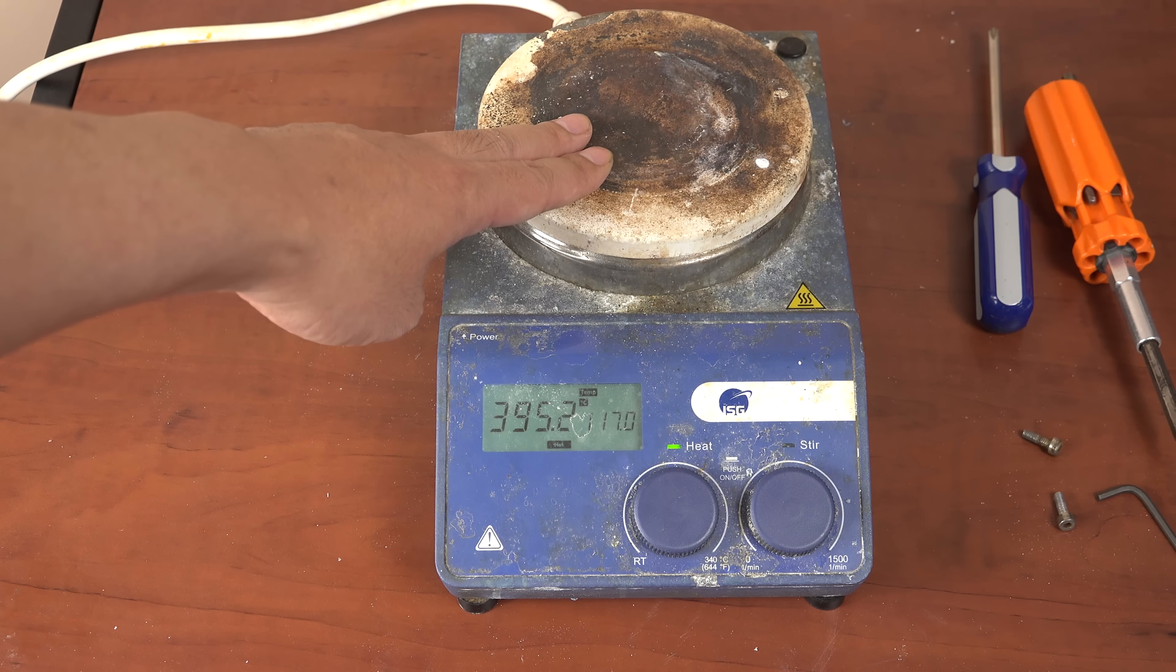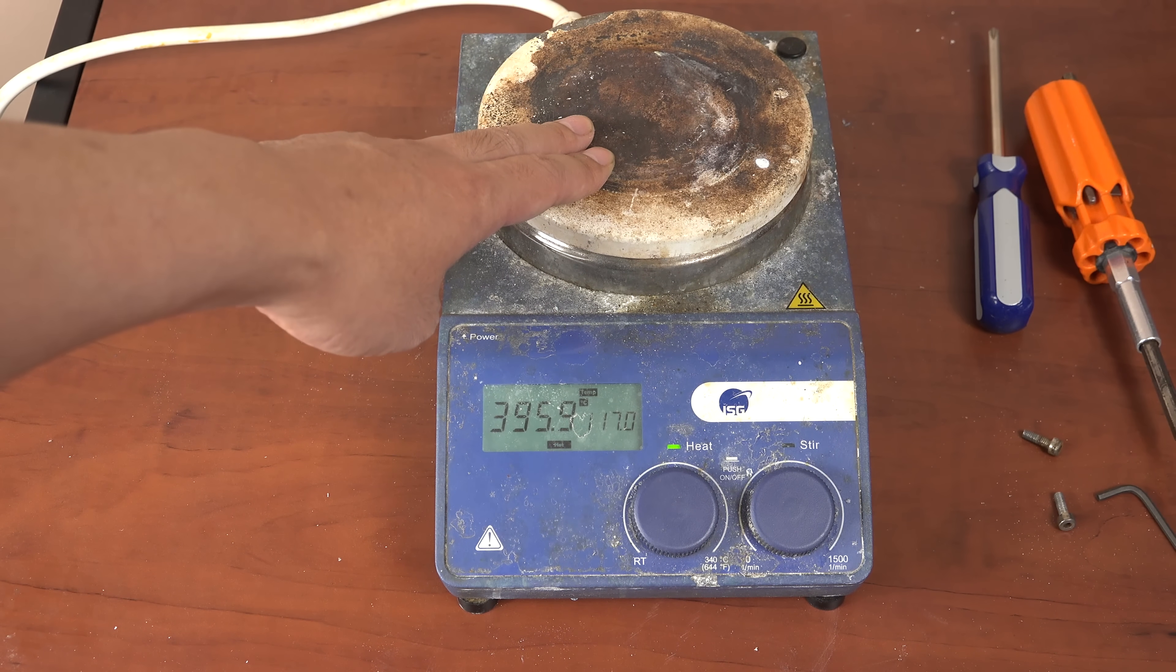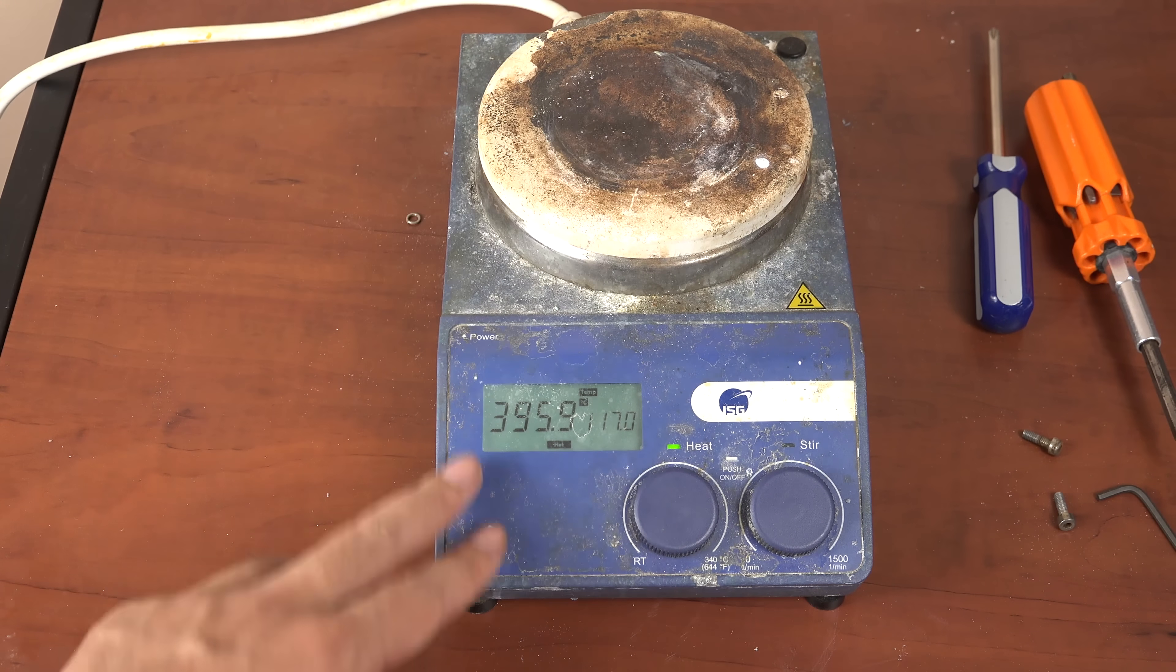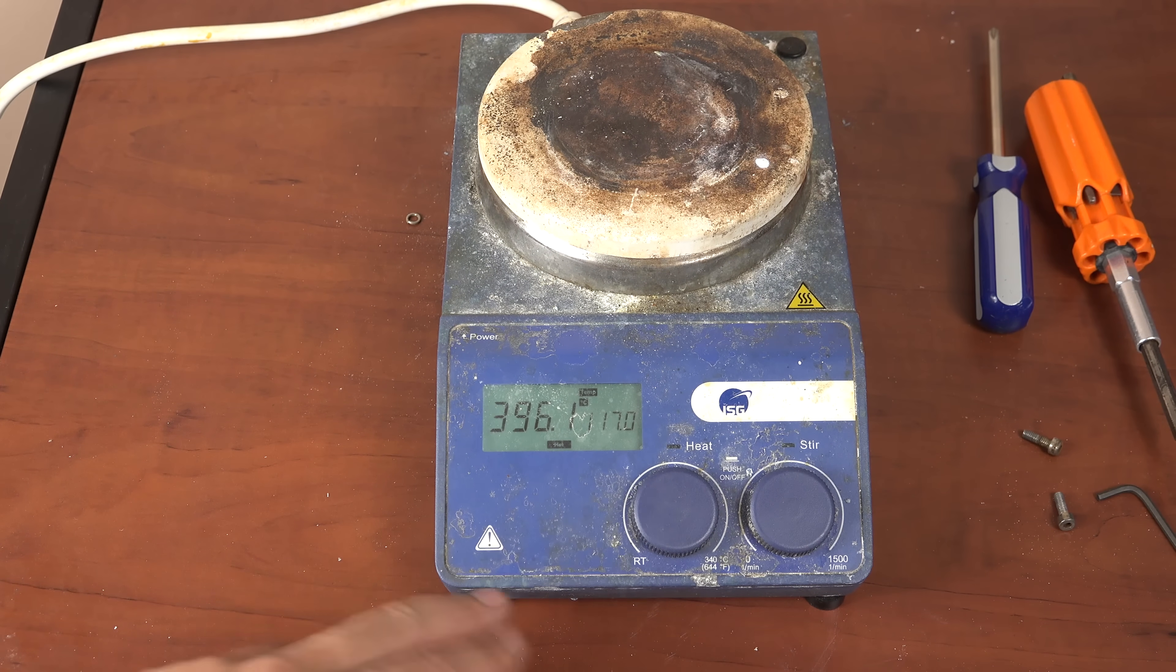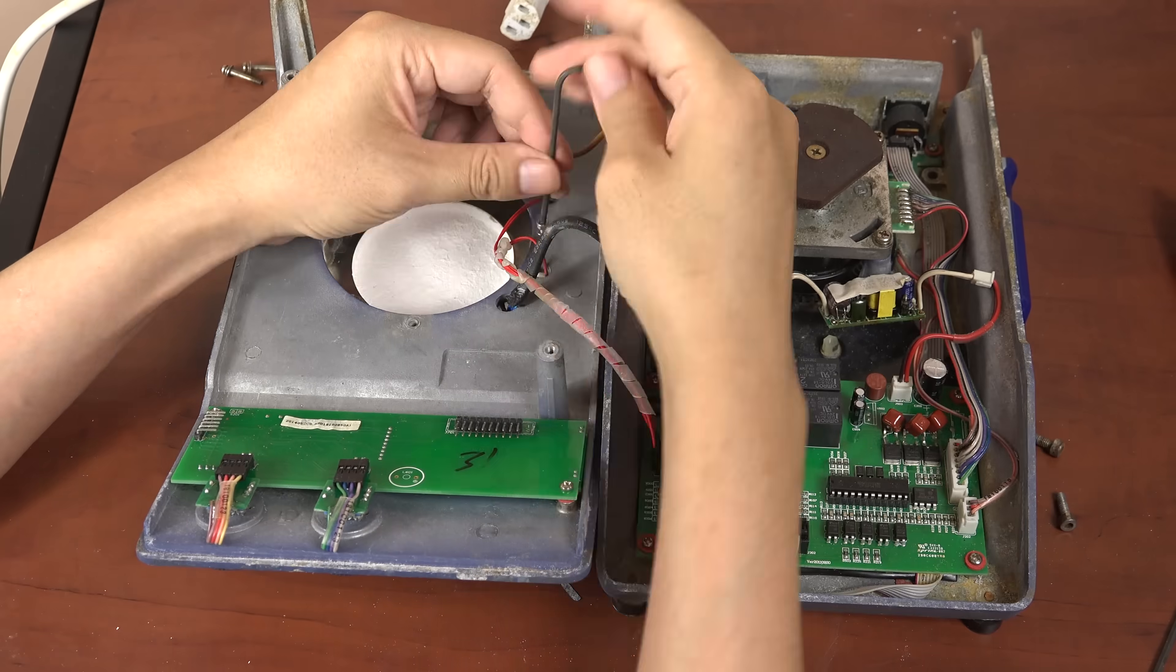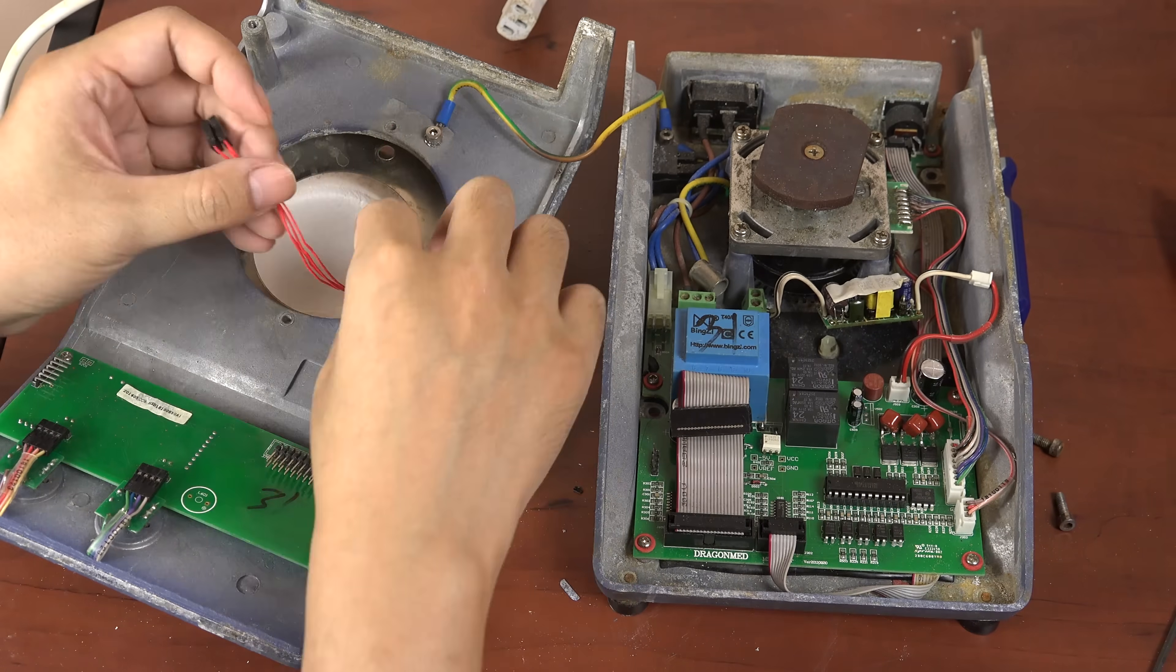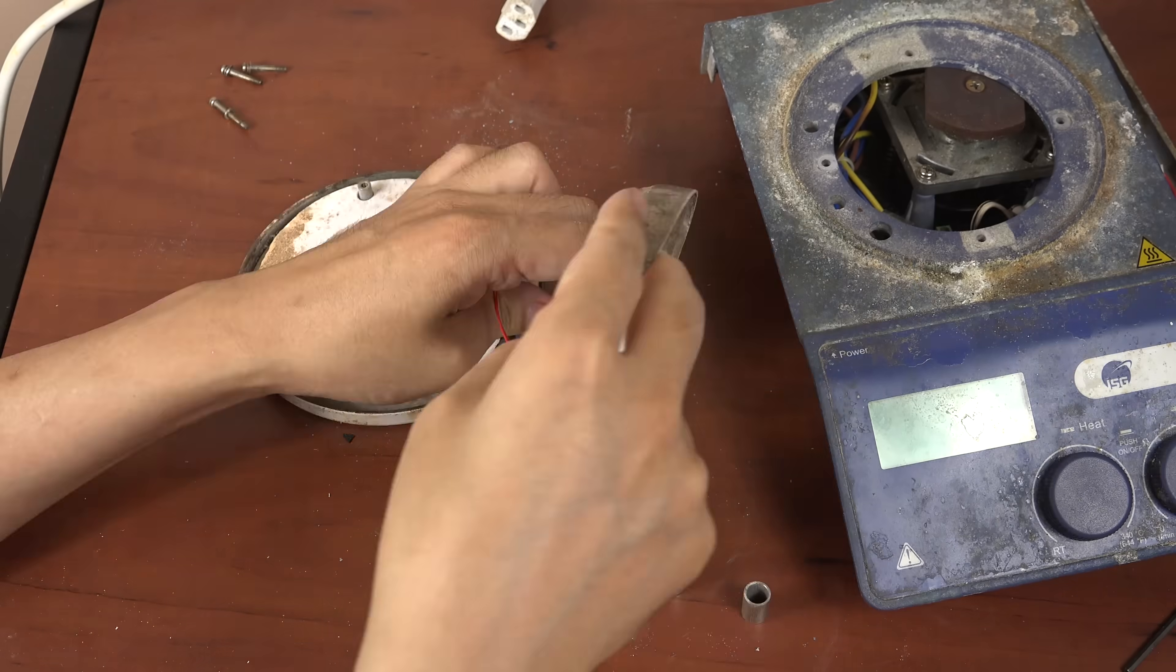The main problem is that the hot plate uses a feedback system for temperature control, so if it believes it's too hot it won't turn on the heating element. This is different from other hot plates in that they will apply power regardless of temperature. While having a feedback loop is good for safety, it means we have to fix the sensor. So let me open it up and see if we can find it.